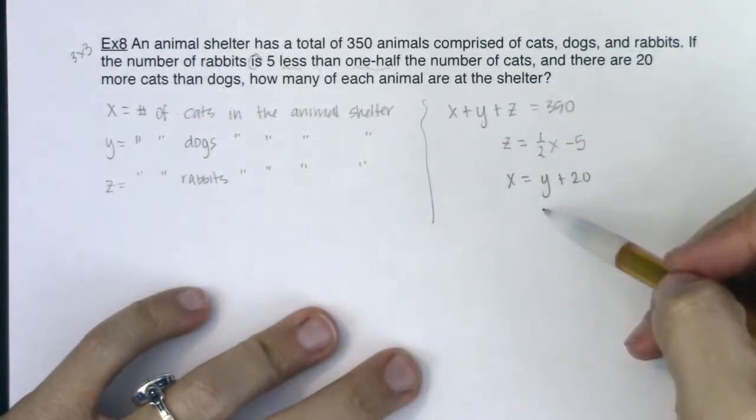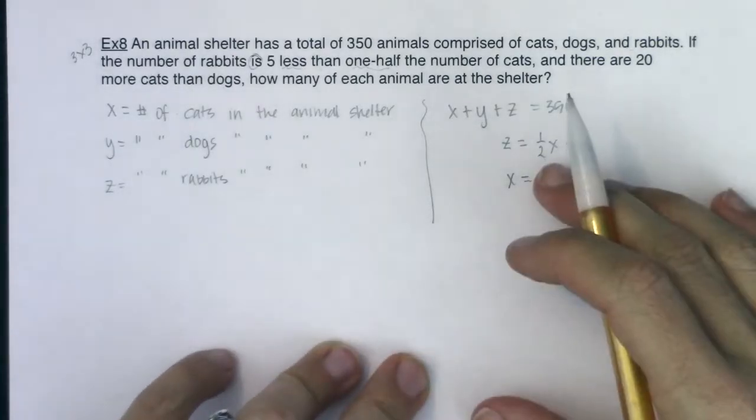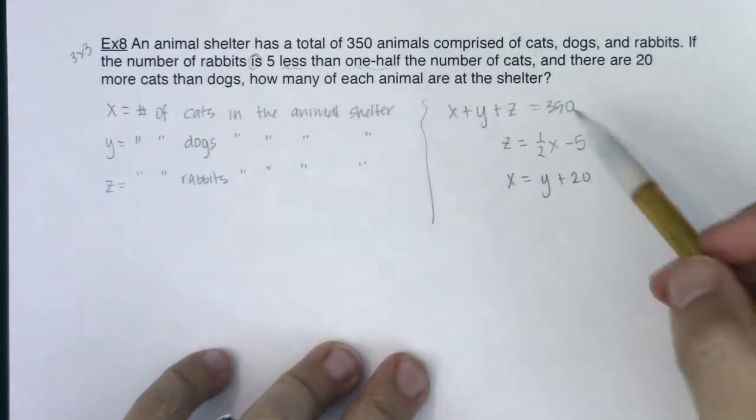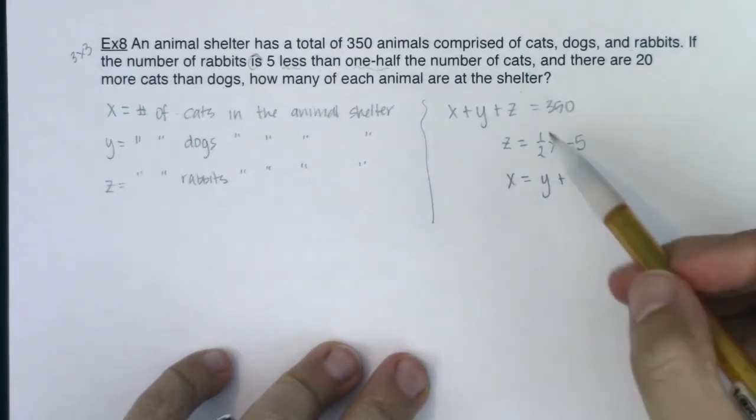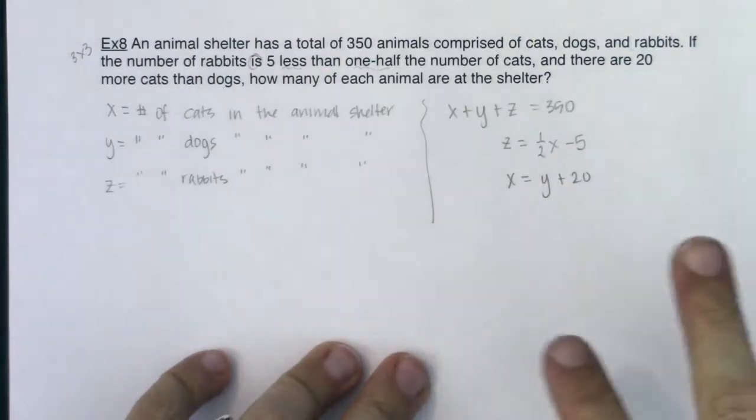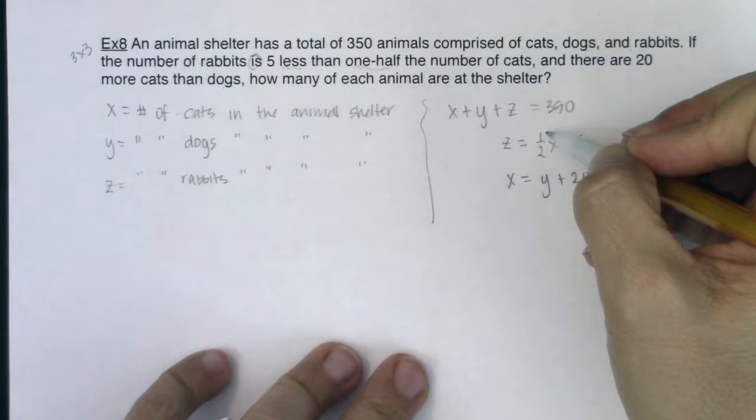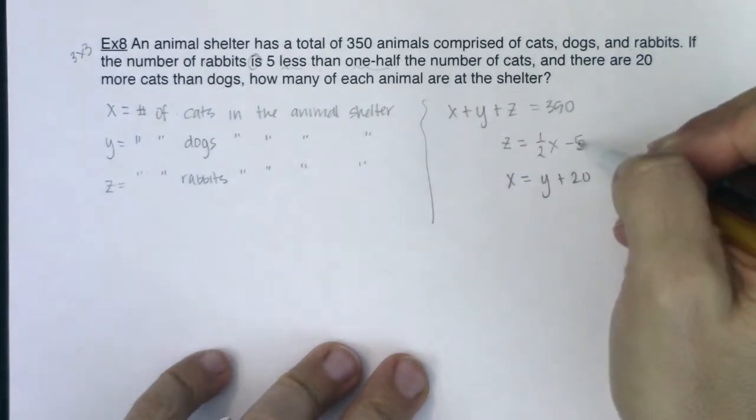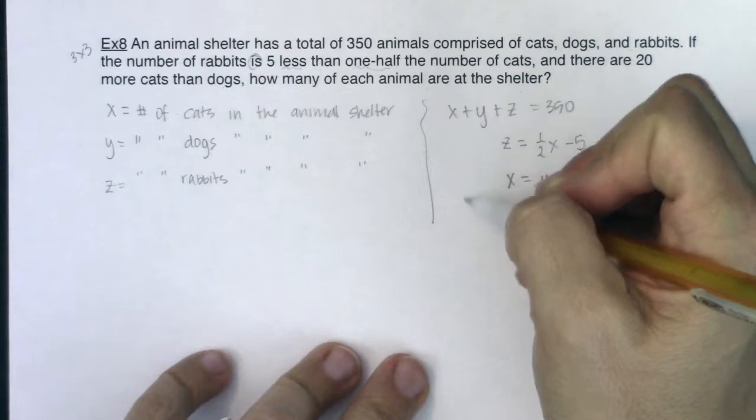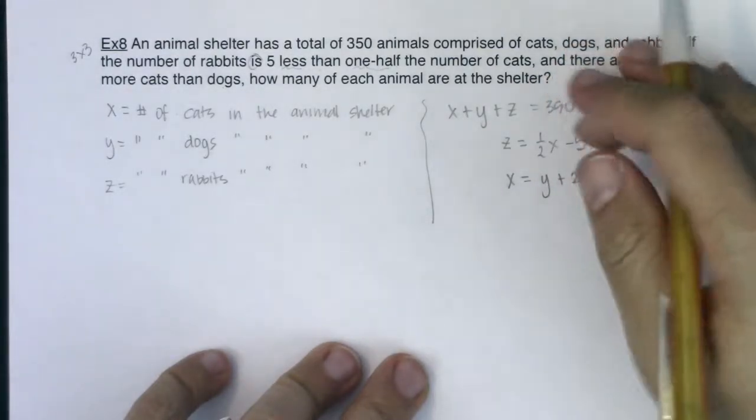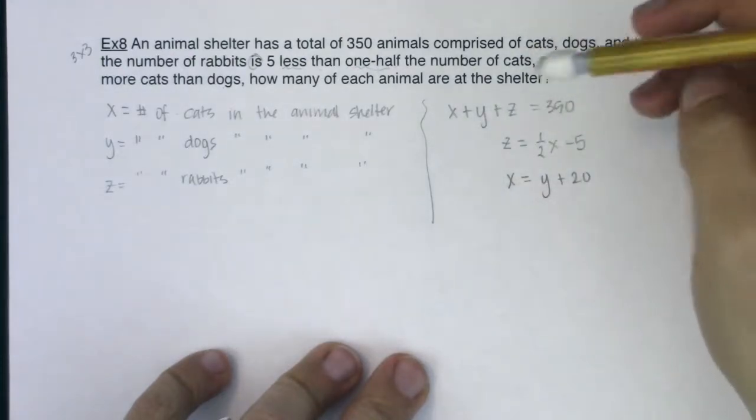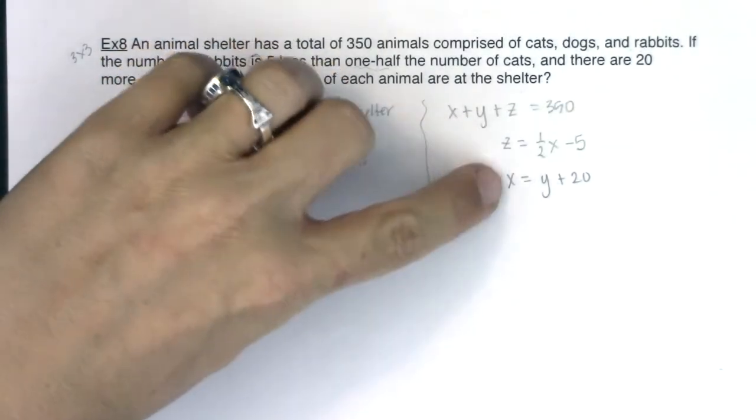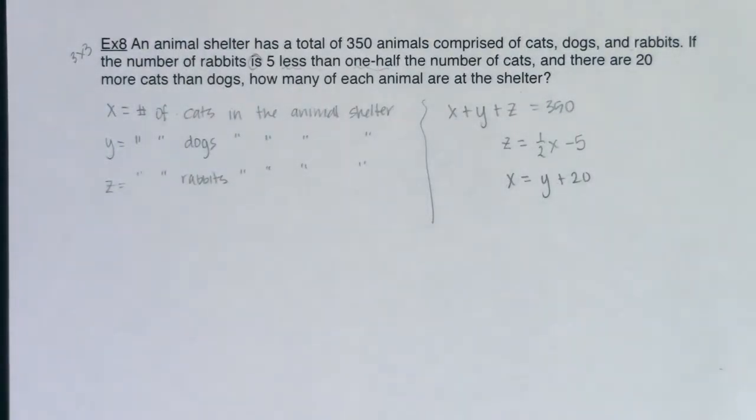I see my three equations. I have three variables and three equations. Now you can solve these using either substitution or elimination. I'm going to use substitution for this problem. If I wanted to use elimination, I would move the one-half x over so I would have negative one-half x plus z equals negative five, and I would have x minus y equals 20. I would manipulate them so I only have the constants to the right of the equal sign. I just don't feel like doing that, especially since these are already solved for a certain variable.